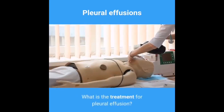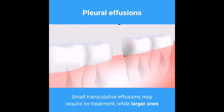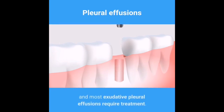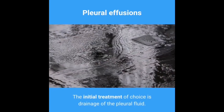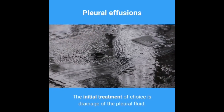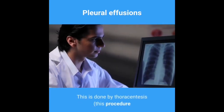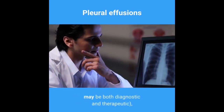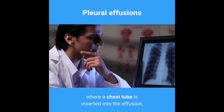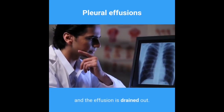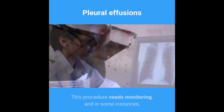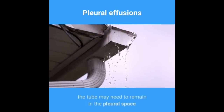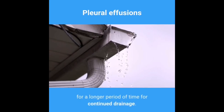Small transudative effusions may require no treatment, while larger ones and most exudative pleural effusions require treatment. The initial treatment of choice is drainage of the pleural fluid, performed by thoracentesis. This procedure may be both diagnostic and therapeutic, where a chest tube is inserted into the effusion and the fluid is drained out. This procedure needs monitoring, and in some instances the tube may need to remain in the pleural space for a longer period for continued drainage.